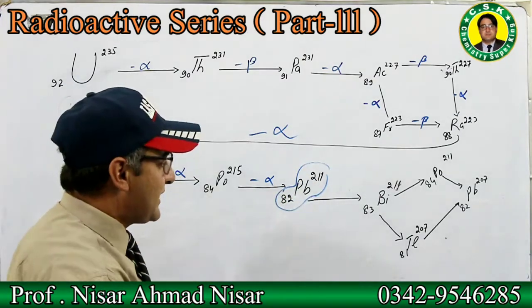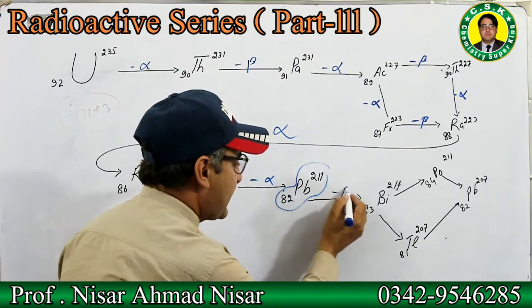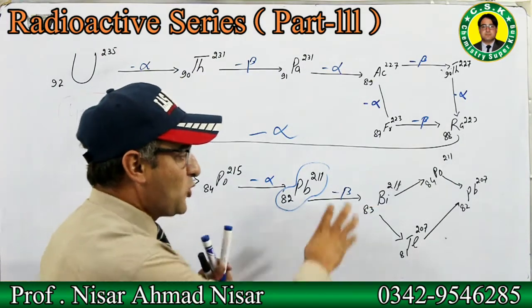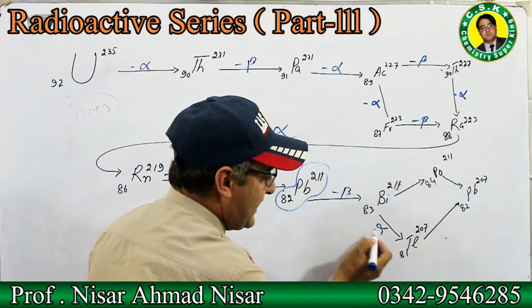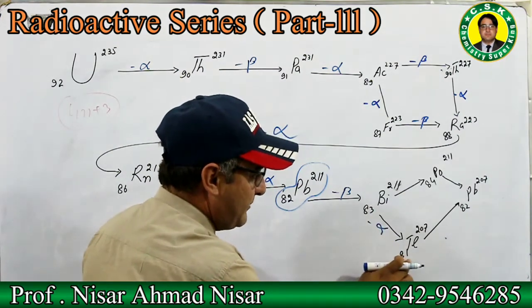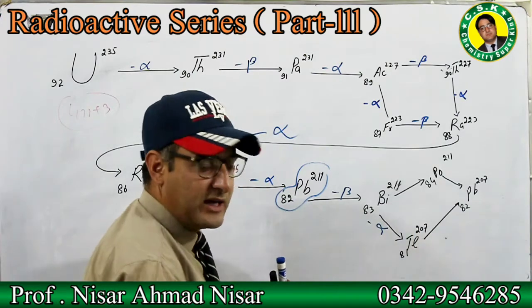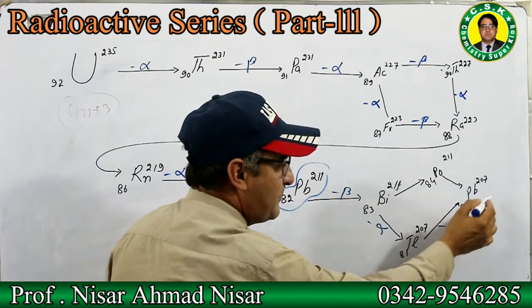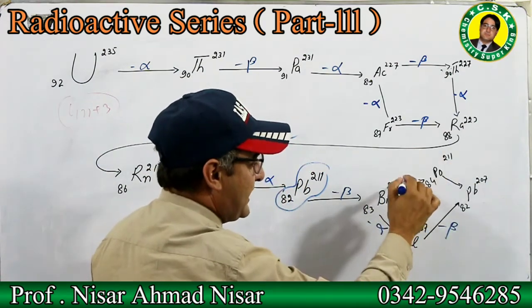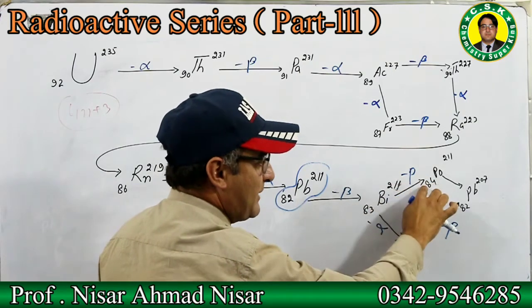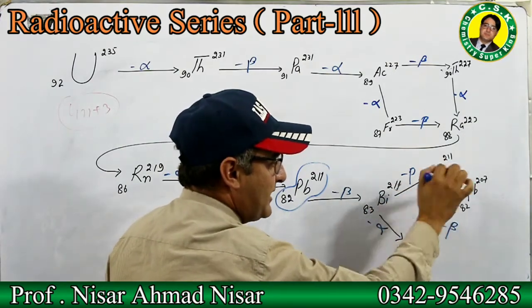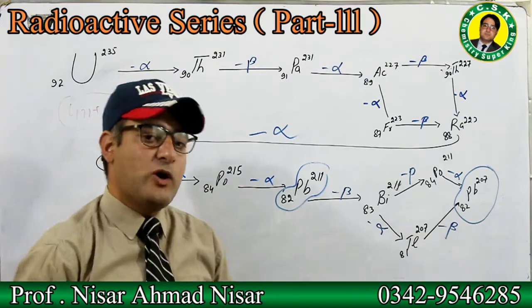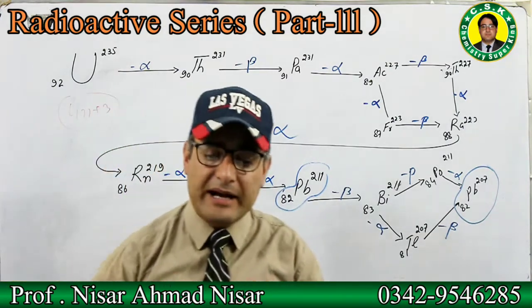Lead-82-211 can follow two paths. Path one: a negatron (beta particle) is emitted, atomic number increases by 1, mass number stays at 211 — giving bismuth-83-211. Then an alpha particle is emitted: atomic number decreases by 2 to give thallium-81-207. Path two: an alpha particle is emitted first to give thallium-81-207, and then a negatron is emitted — atomic number increases by 1, giving polonium-84-211, which then emits an alpha particle. Both paths end at lead-207.